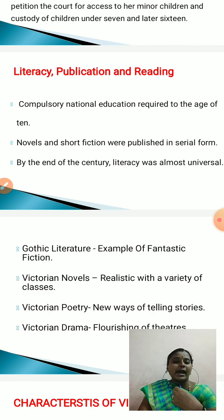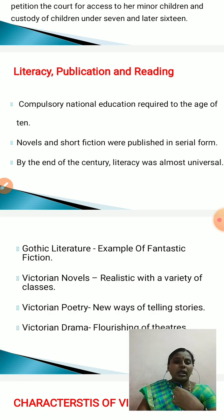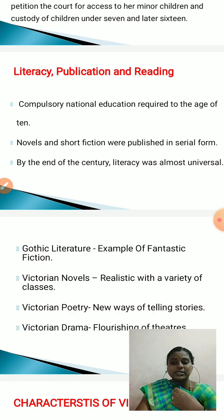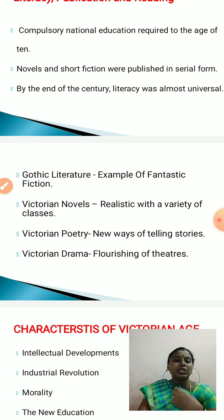Victorian novels are mostly realistic with their variety of classes. A major theme of Victorian novels is individuality. Women were major writers during this period; examples include the Brontë sisters, George Eliot, and many more. Victorian poetry gave a new base for telling stories, with Victorian poets always showing a strong influence of romance, as the age came after the Romantic period. In Victorian drama, there was a flourishing of theatres, with Oscar Wilde and Bernard Shaw as examples of Victorian dramatists.